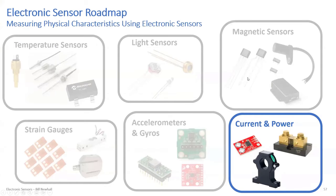Here's where we are on the sensor roadmap. We talked about temperature sensors, light sensors, magnetic sensors, strain gauges, and just finished up gyros and accelerometers. Now we're going to talk about the different ways to measure current and power.